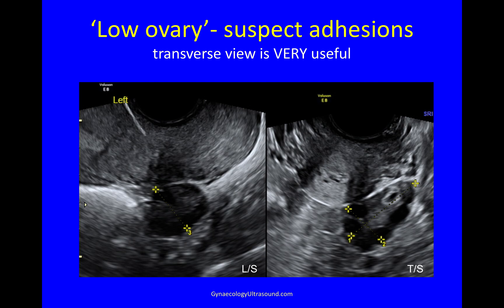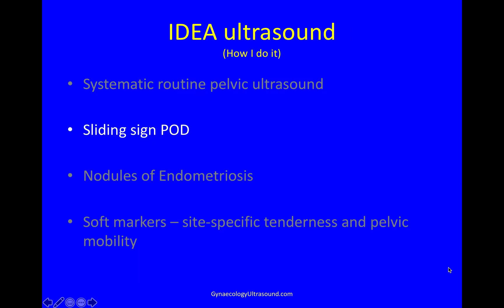A scan may say that the ovary is low, and in this case you really need to suspect endometriosis. Where this ovary is low, this is the level of the internal os and there is the level of the torus. And in the transverse plane — internal os, torus — you can see the left utero-sacral ligament, and this ovary is adherent to it.